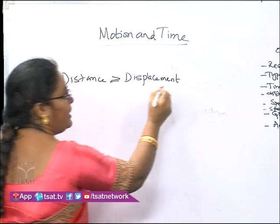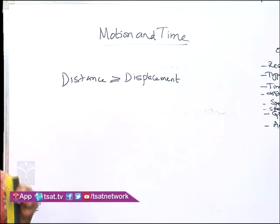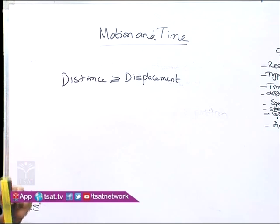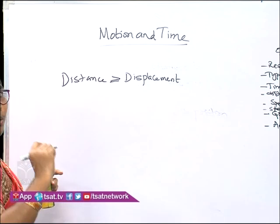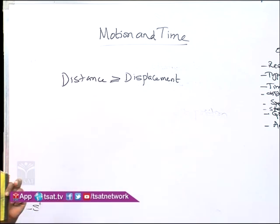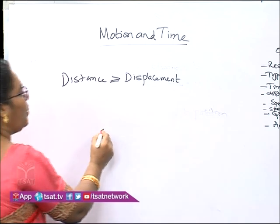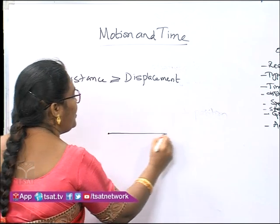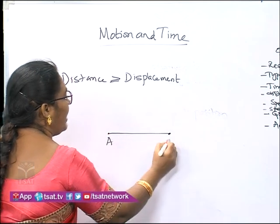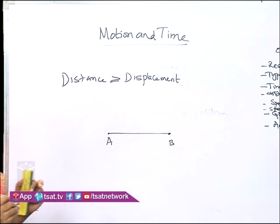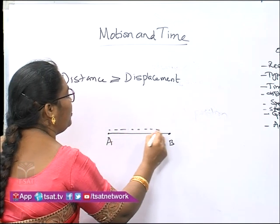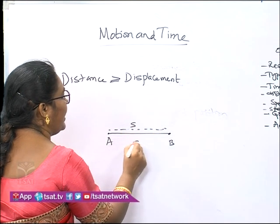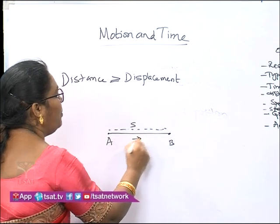Displacement is the length of the path in a particular direction — it is a straight line motion. Here the displacement is zero but distance can never be zero. When is distance equal to displacement? Suppose this is the shortest path between two points A and B. If the object moves along this path only, then distance is equal to displacement.